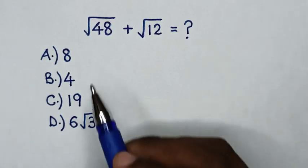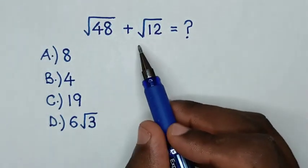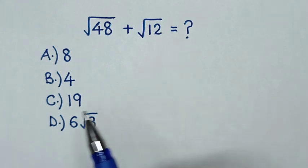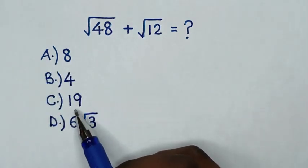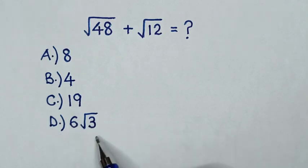Hello! How to solve square root of 48 plus square root of 12? Select between the answers: a, 8; b, 4; c, 19; d, 6 square root of 3.